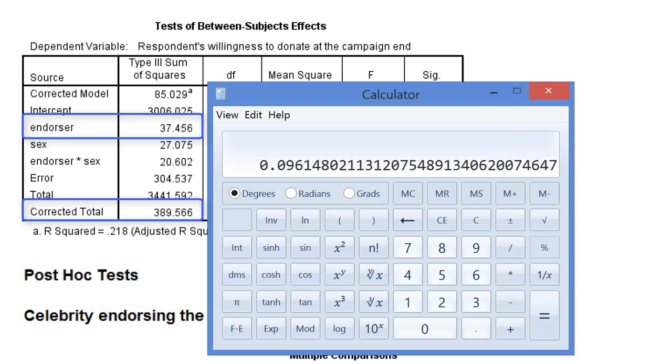In this case, eta-square is 9.6%. 9.6% of the variation in respondent's willingness to donate can be predicted or explained by the celebrity endorsing the campaign.